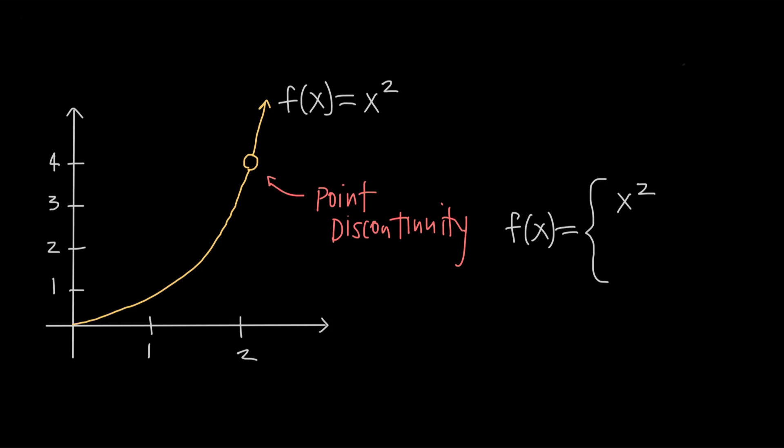To patch the hole in a graph, all you need to do is add a condition to the function with the point discontinuity. For example, there's a point discontinuity with this function at x equals 2.